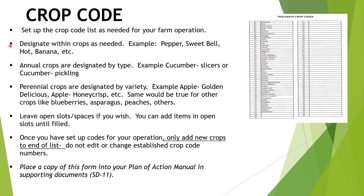If you designated every pepper with the same crop code, you could lose a lot of crops if you had a quarantine on one field of bell peppers but had many different varieties all listed just as 'pepper' — the quarantine would cover every field with peppers. So you want to designate within your crops what they are. Annual crops are designated by types. For cucumbers, you might put slicers for larger ones or pickling for smaller cucumbers. You do not have to list every single variety — just designate by type.